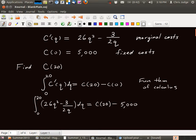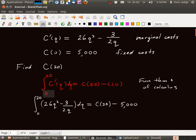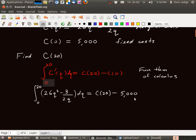Okay, so we've entered all the things that we know into the fundamental theorem of calculus. We've entered everything in. C of 0, C prime of Q was given to us by 26Q squared minus 3 over 2Q. And now we just solve for C of 20.